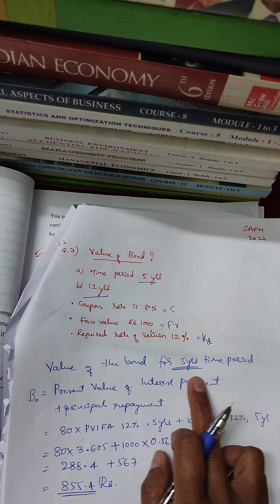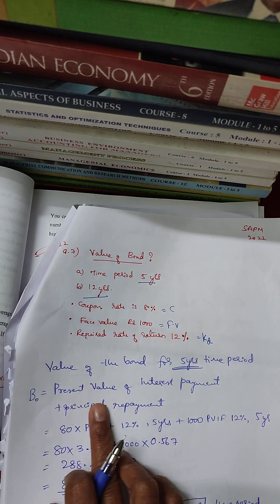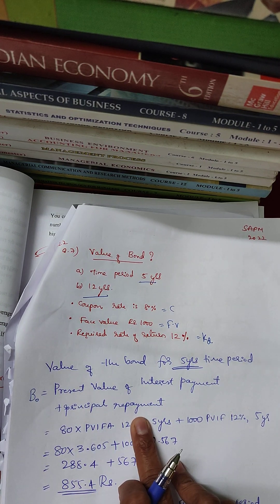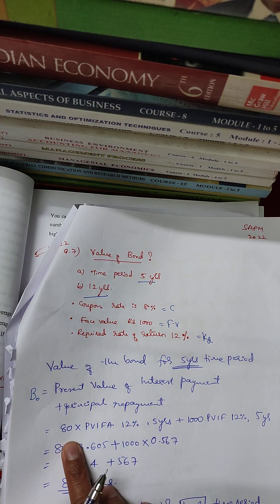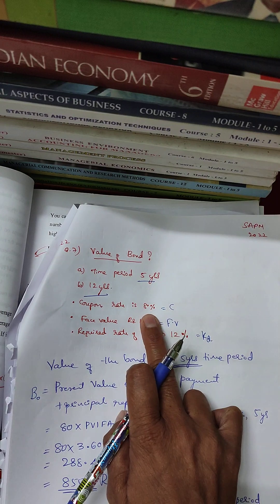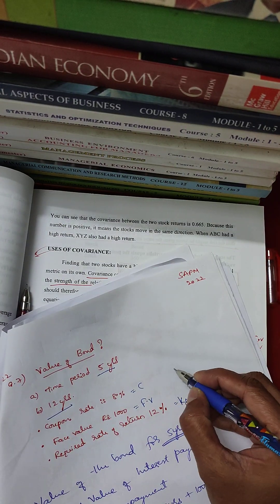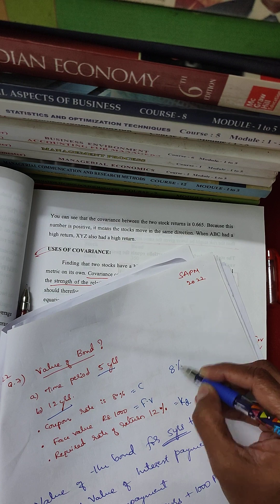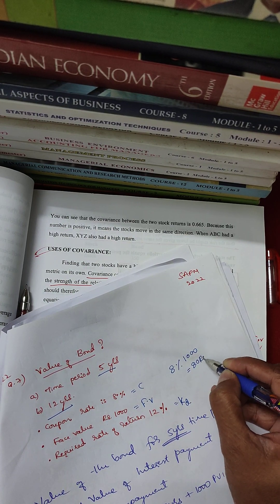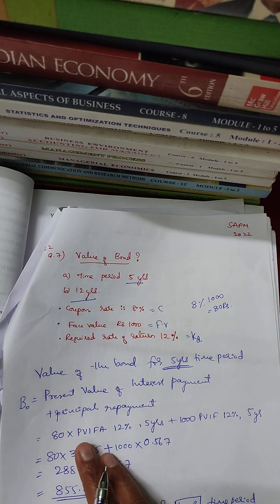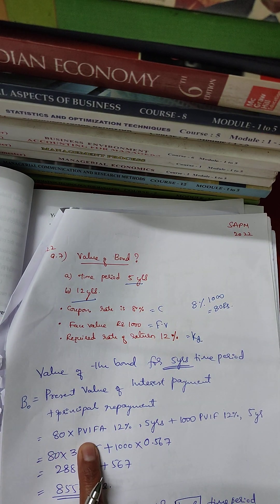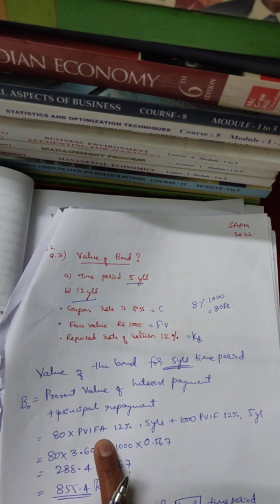So, value of the bond for 5 years time period. B0 is equal to the present value of the interest payment plus principal repayment. The present value of the interest payment — the coupon payment is 8% of face value 1,000, which equals 80 rupees.